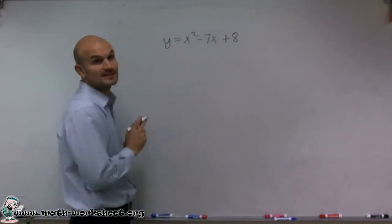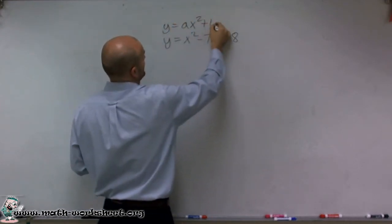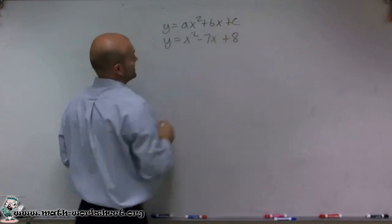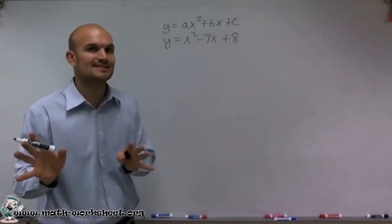One thing we need to understand is this is a quadratic. All quadratics can be rewritten in the form ax squared plus bx plus c, where a, b, and c are real numbers and they are coefficients.